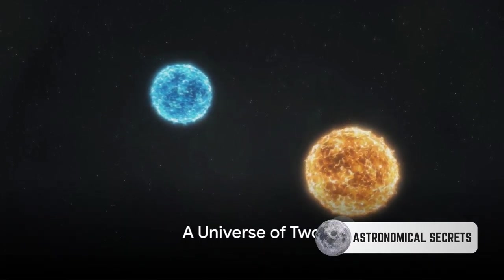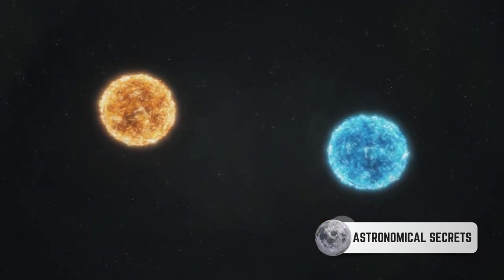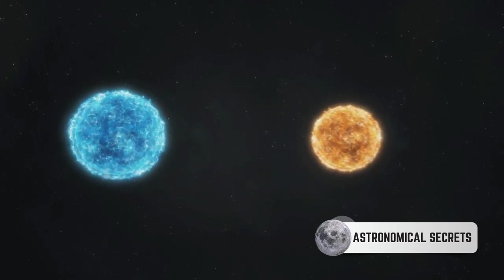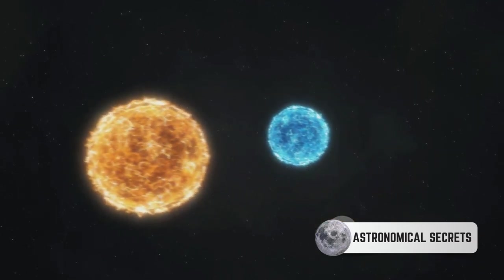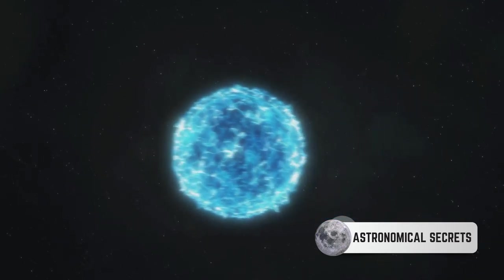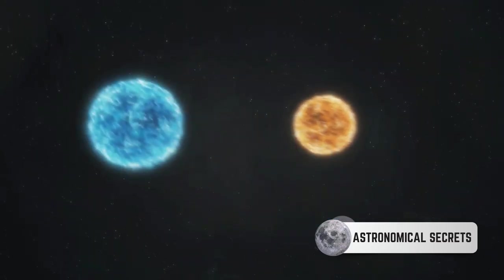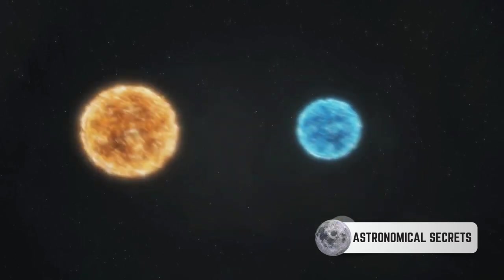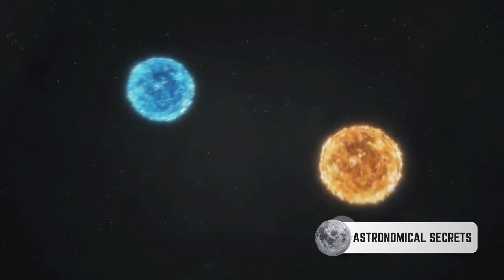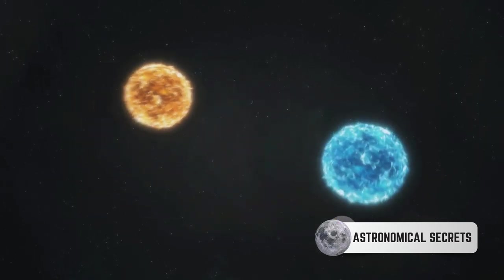Have you ever wondered what life would be like if our sun had a twin? Picture it, two brilliant orbs illuminating our sky, casting shadows that dance and twist in an ever-changing spectacle of light and dark. This isn't a scene from a science fiction novel, but a reality for many planets in our cosmos. Welcome dear listeners to the world of binary stars.